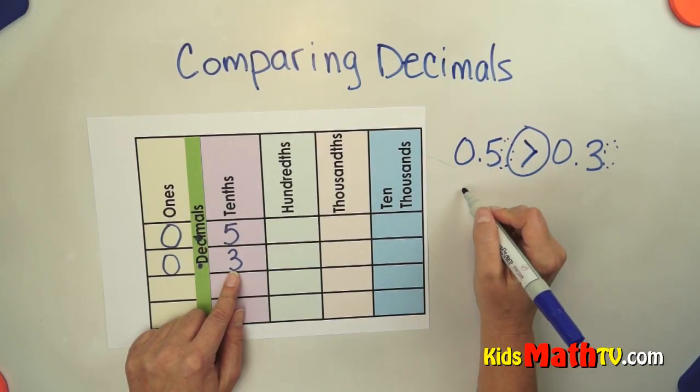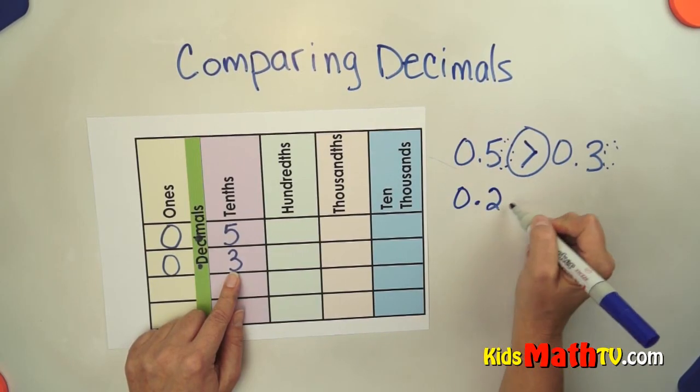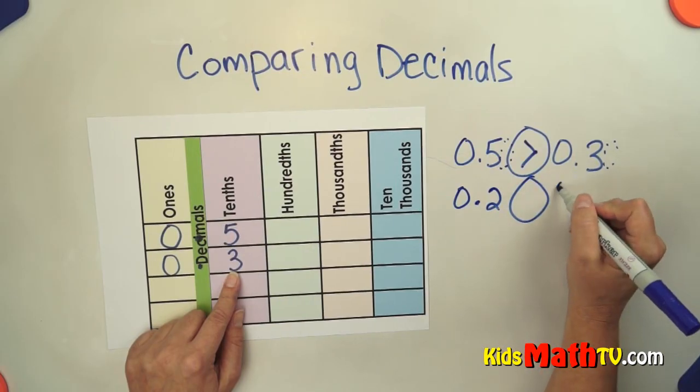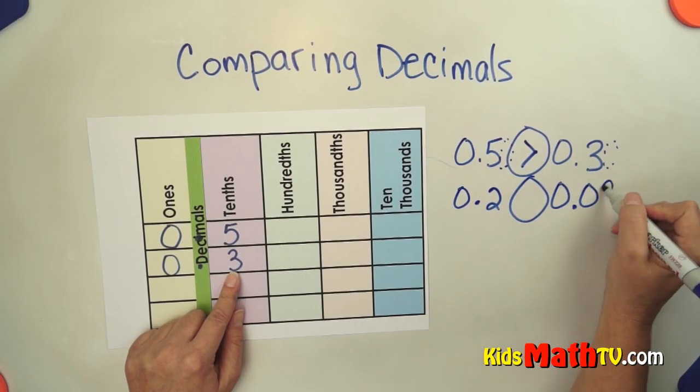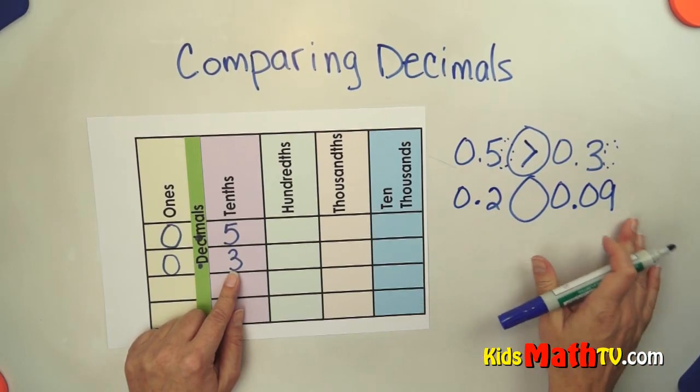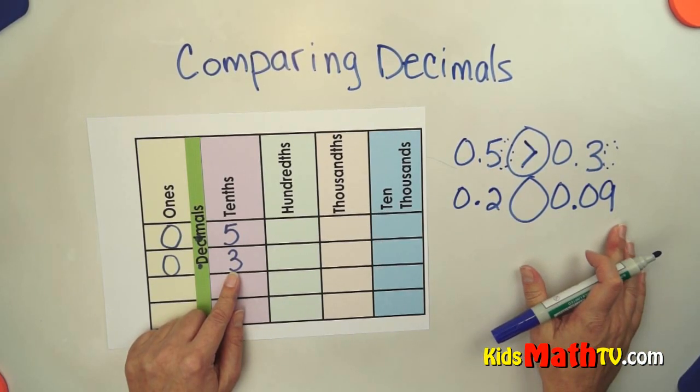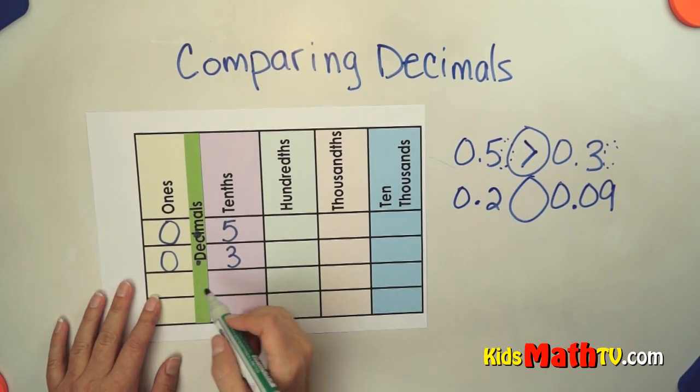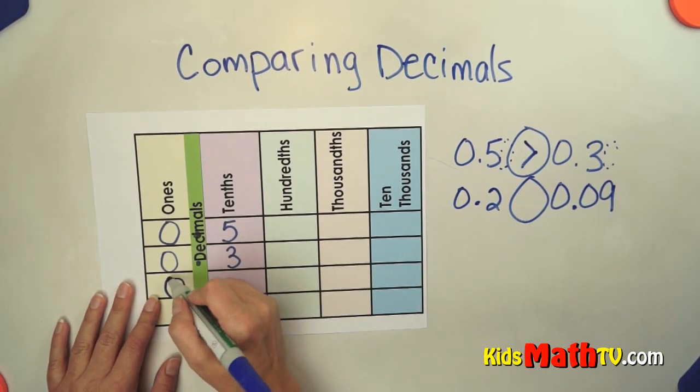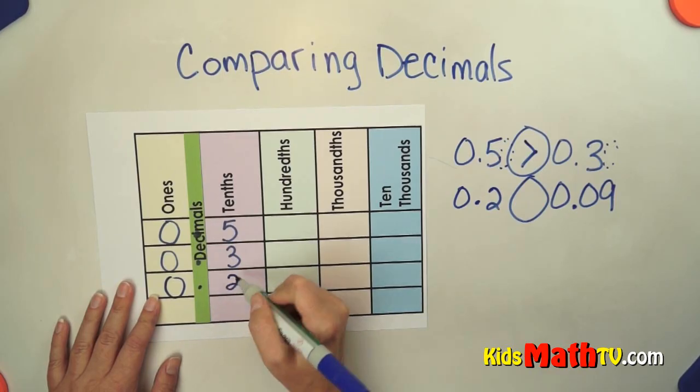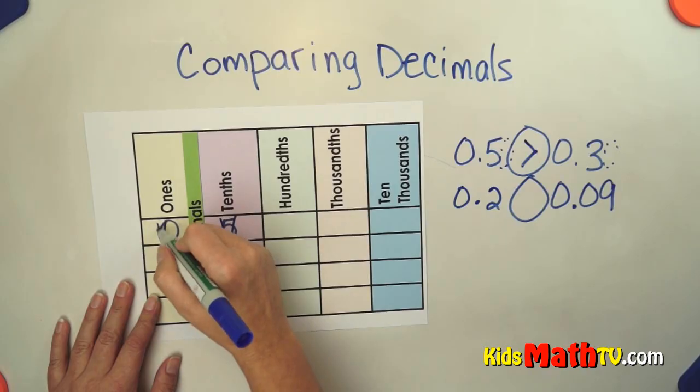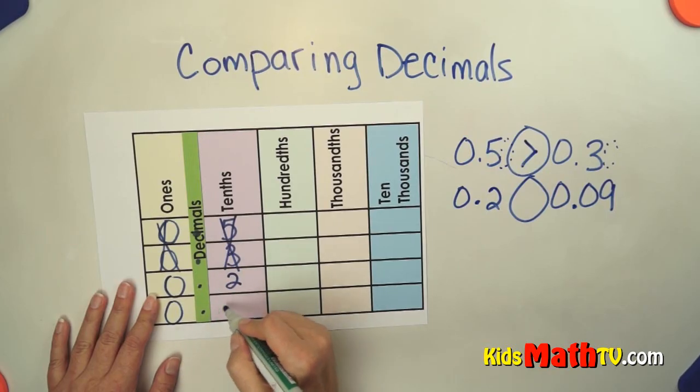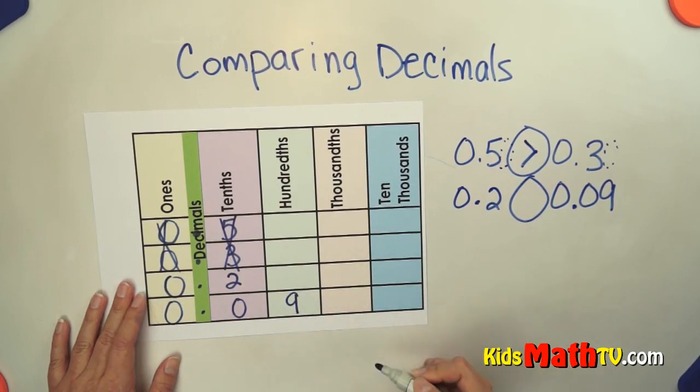Let's try another one. How about 0.2 compared to 0.09? Many people see this and think, oh, that one's bigger, 9 is bigger than 2. Well, let's put it on the decimal chart. We have 0.2. I'm going to cross these out so I don't look at them. And we have 0.09.